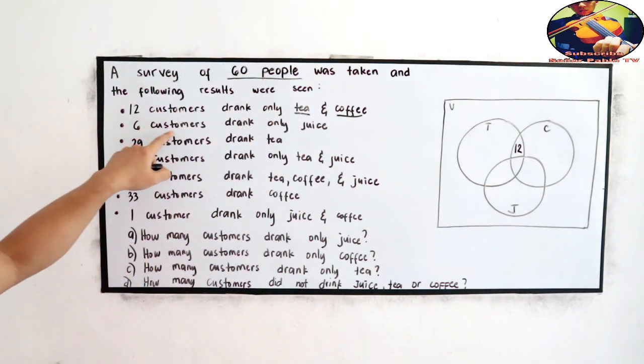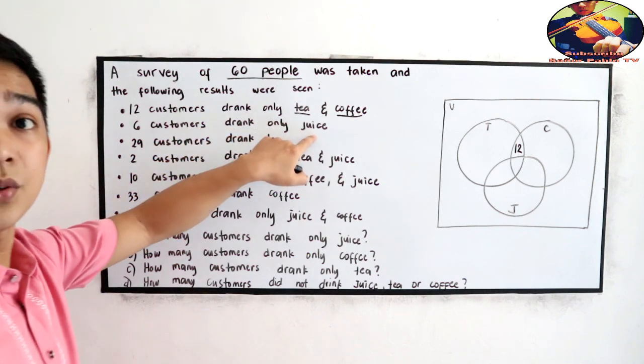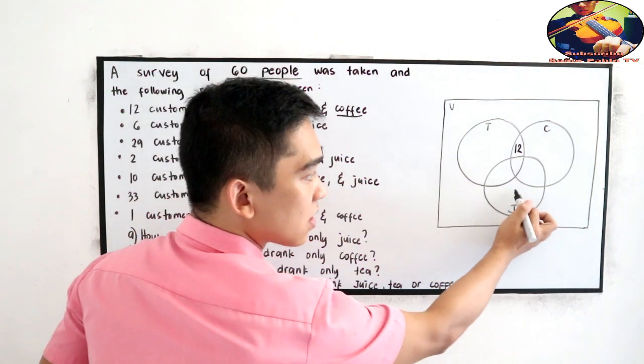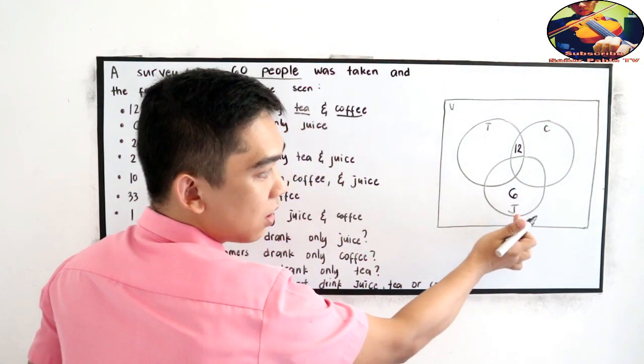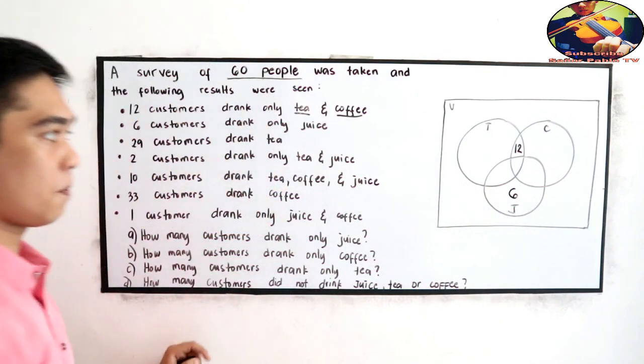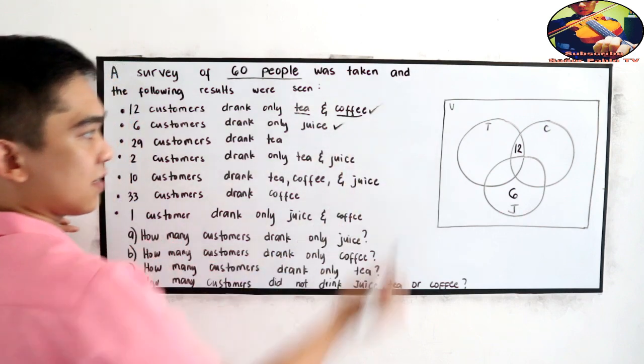6 customers drank only juice. Only juice. So we're going to write 6 on the part of juice only. So we are done here and in this given.